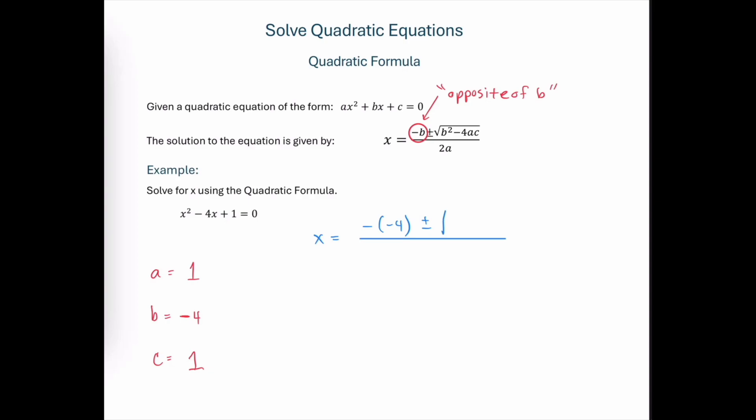And then we have plus or minus the square root of. Following our formula, we now have b squared. Since we're going to plug something in for b and then square that quantity, we do want to open up parentheses right here to ensure that we square everything that's needed.